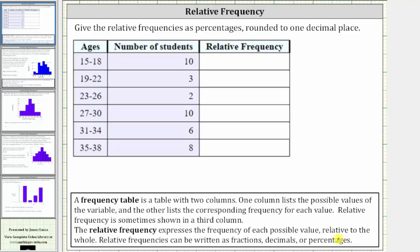So the first step is to determine the total number of students by summing this column here. 10 plus 3 plus 2 is 15, plus 10 is 25, plus 6 is 31, plus 8 is 39. The total number of students is 39.